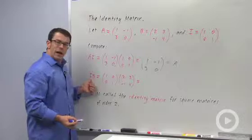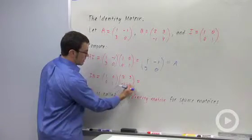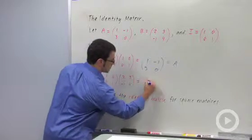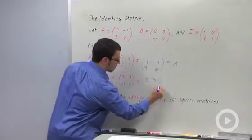Now let me multiply I times B. So here's I and here's B. I get 2 plus 0, 2. I get 3 plus 0, 3.